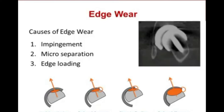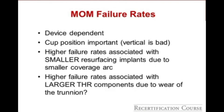Edge wear can occur when the hip impinges, with micro-separation during ambulation, or with edge loading when contact area is outside the cup edge. This may be due to reduced coverage, as many metal-on-metal cups were less than a hemisphere, steep inclination or vertical cup position, or reduced clearance. Metal-on-metal failure rates have been device-dependent — vertical cups were associated with increased failure, likely due to edge wear. With hip resurfacing, higher failure rates were seen with smaller implants, typically female patients. With total hip arthroplasty, larger implants had higher failure rates, possibly due to trunnion wear and corrosion.